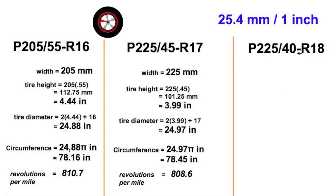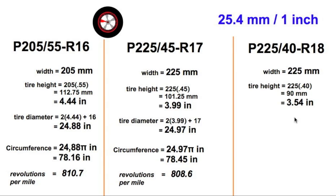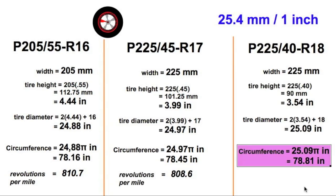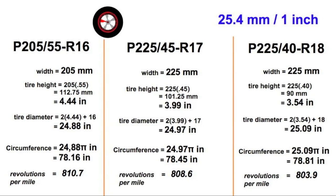Let's go to this one. How about if you got the 18s? I think the new Golfs are making this available. If you really like those low-profile tires, let's work this out. Same width as the 17s. Calculate the tire height — another half inch shorter. If you don't have potholes where you are, maybe you like those 18-inch tires. My diameter is just about 25 inches — just a hair bigger. When I calculate the circumference and then the revolutions per mile, it's the lowest number yet. All three of these are pretty close.